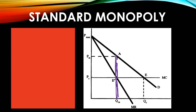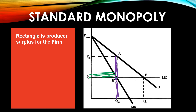We can think about what's going on with surplus in this situation. For the units that are actually consumed and produced, we can think about the producer surplus for the firm — everything below the price actually charged but above the cost faced. The firm faces their marginal cost curve, and for all units sold at price PM, our producer surplus becomes this green box shaded in — everything below the price they sell at but above their costs for those units.